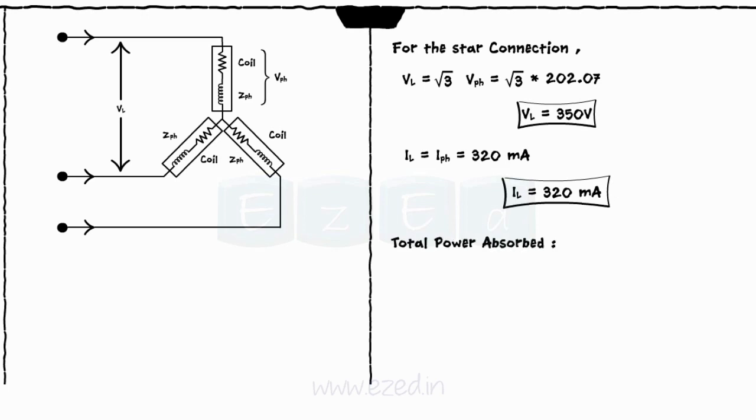The total power absorbed is given by P equals root 3 into VL into IL cos phi that comes out to be 12.34 watts.